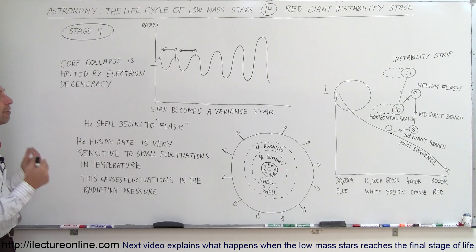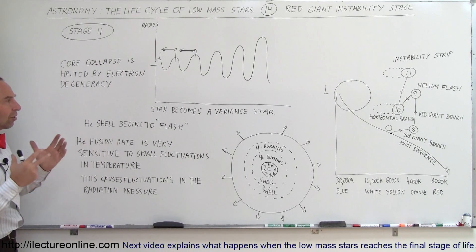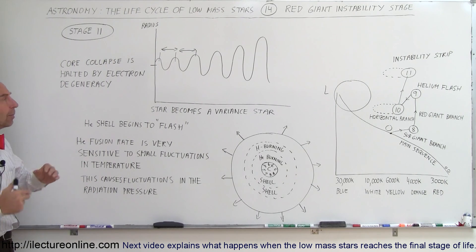That's what we call the variable or the instability stage of the star, where you have these regular intervals of fluctuations in brightness and dimming.